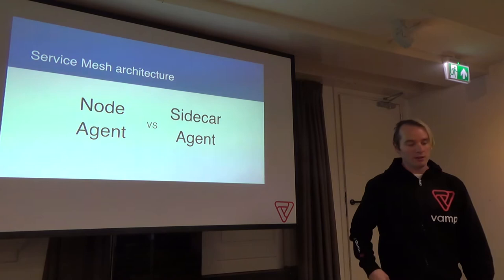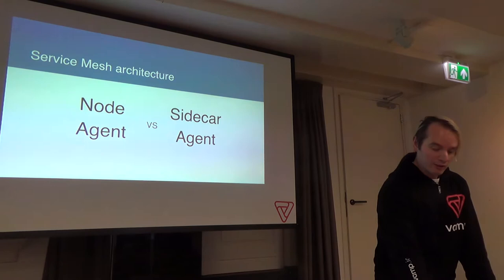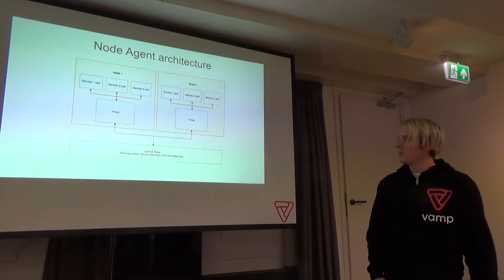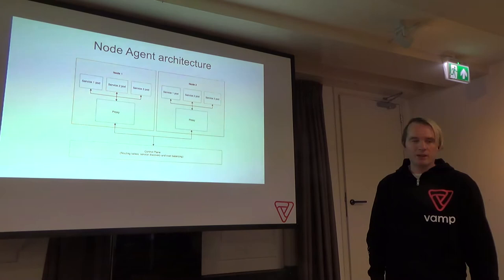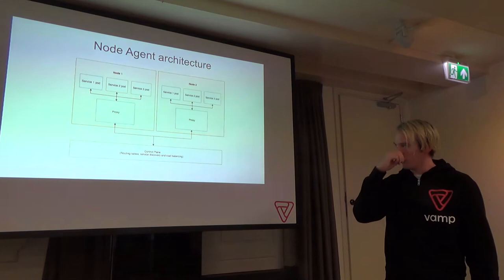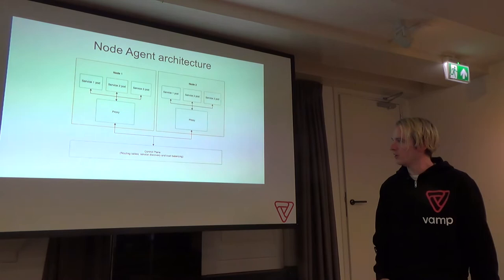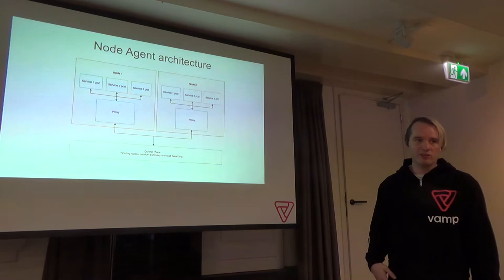When talking about architectures, we have two approaches: a node agent or a sidecar agent. With the node agent approach, you have two nodes running different services and on each of them you have a proxy — the node agent — which constitutes the data plane of the mesh. The data plane handles all communication between services inside the node and from those services to services outside the node. On top of all of this is the control plane, a configuration layer that contains configurations and policies applied to the data plane.